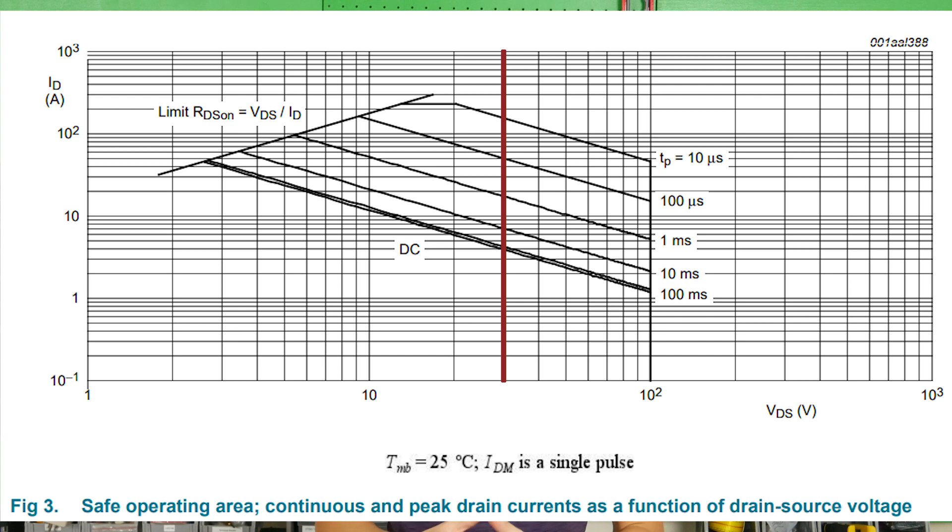With this voltage stress considered, let's assume we were in a current regulating mode forever with a short circuit, so the pulse width is DC or steady state. With this operating mode, we should be able to survive this stress for as long as less than 3.5 amps is flowing through the transistor.